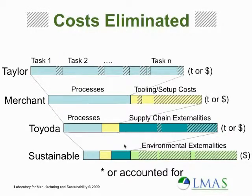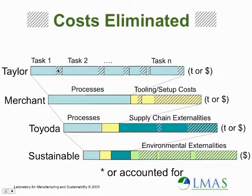This gets us to a final summary slide on how we've looked at things that are eliminated in the course of moving through these different paradigms. What I've got here is a series of bar charts. The length of the bars represents the money or time associated with a series of tasks — task one, task two, and so on — necessary to convert materials or products into a final sub-assembly or product.